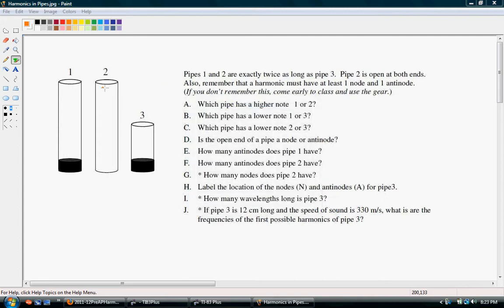It says here that pipes 1 and 2 are exactly twice as long as pipe 3. Pipe 2 is open at both ends, while pipes 1 and 3 have closed ends on the bottom. Also remember that a harmonic must have at least one node and one anti-node to be present.